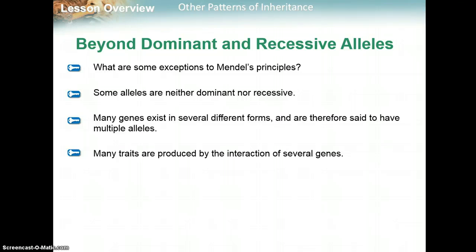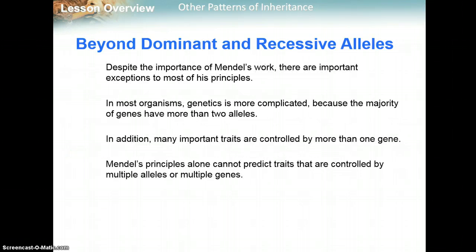We're going to talk about some alleles being neither dominant nor recessive. Many genes exist in several different forms and are said to have multiple alleles. Many traits are produced by the interaction of several genes. Despite the importance of Mendel's work, there are important exceptions to most of his principles. In most organisms, genetics is more complicated because the majority of genes actually have more than two alleles.